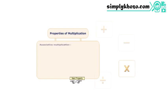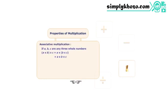While multiplying more than two whole numbers, the order of associating the numbers does not have an impact on the final product.